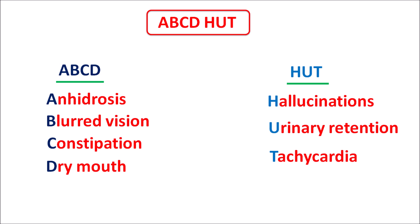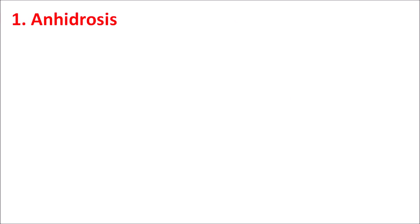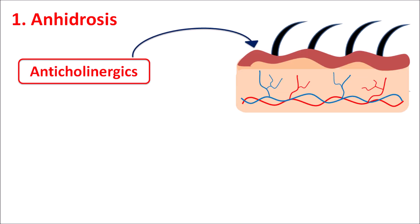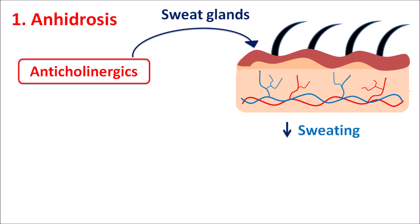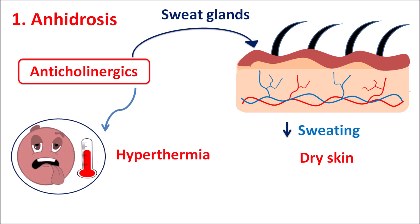The first side effect is anhydrosis. Anticholinergics act on the sweat glands of the skin and inhibit sweat secretion, resulting in decreased sweating and drying of the skin. At toxic doses, they can reduce sweating extremely, leading to increased body temperature and hyperthermia. Atropine at toxic dose can produce hyperthermia due to decreased sweating.